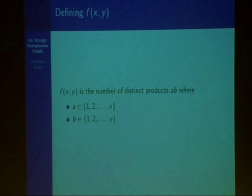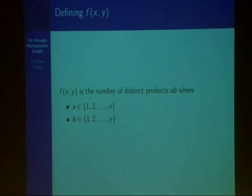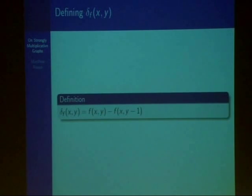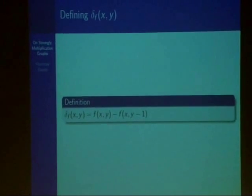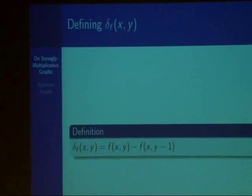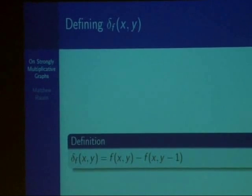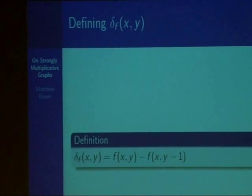We're going to generalize this problem. I developed the function f(x, y), which is the number of distinct products a·b, where a is taken from the set of one through x, and b is taken from the set of one through y. To analyze this function, we're going to define delta_f(x, y), which is equal to f(x, y) minus f(x, y−1). Alternatively, we can think of this as the number of new distinct products that can be formed when y is added to the set of possible values for b, the second factor.